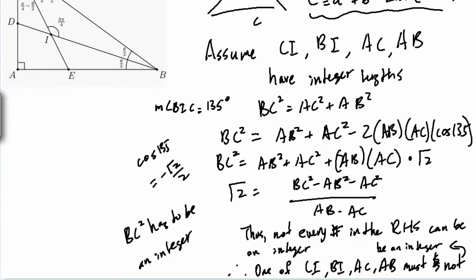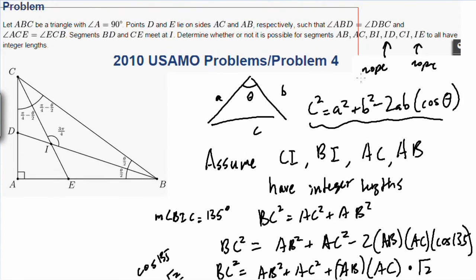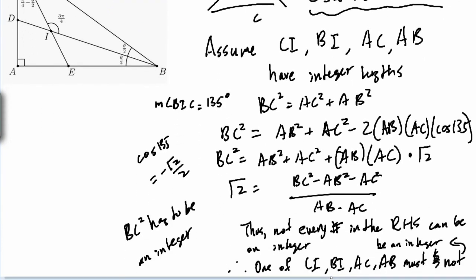All we needed was some simple trigonometry. And to know that it's impossible for all four of these to be an integer. And thus, this can't be true. These can't all have integer lengths. It was a pretty simple problem.